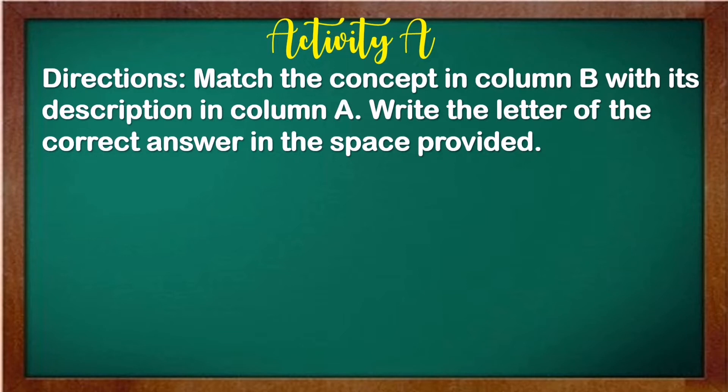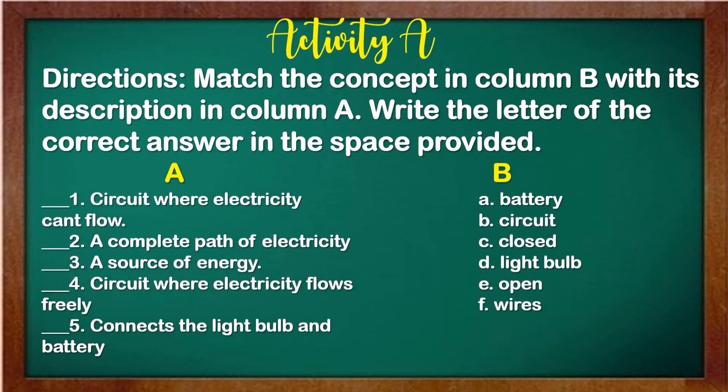Here are some practice activities. We have here activity A. Match the concept in column B with its description in column A. Write the letter of the correct answer in the space provided. Number one, circuit where electricity can't flow. Number two, a complete path of electricity. Number three, a source of energy. Number four, circuit where electricity flows freely. Number five, connects the light bulb and battery. So choose your answer from letter B.